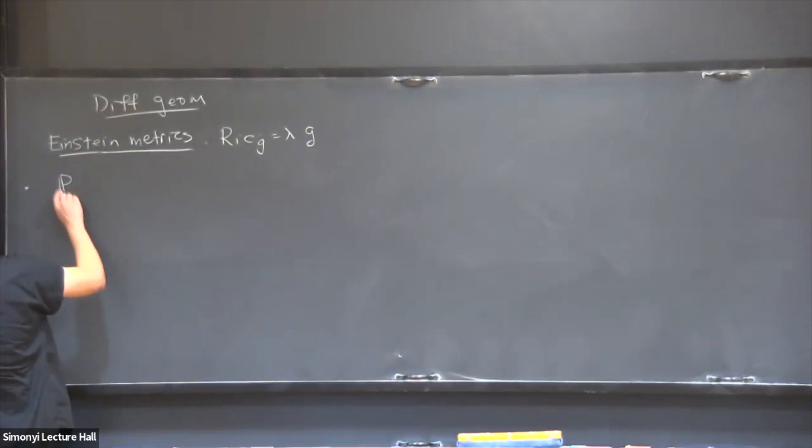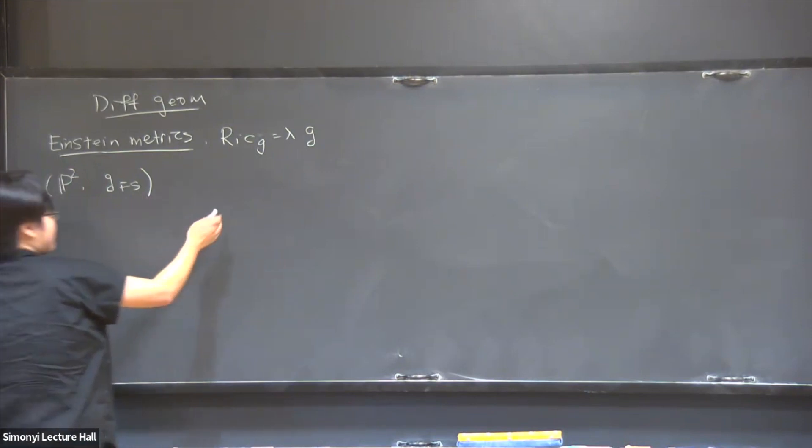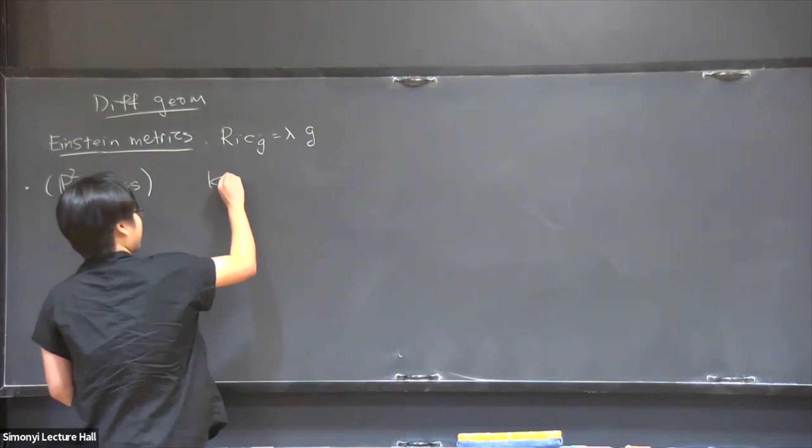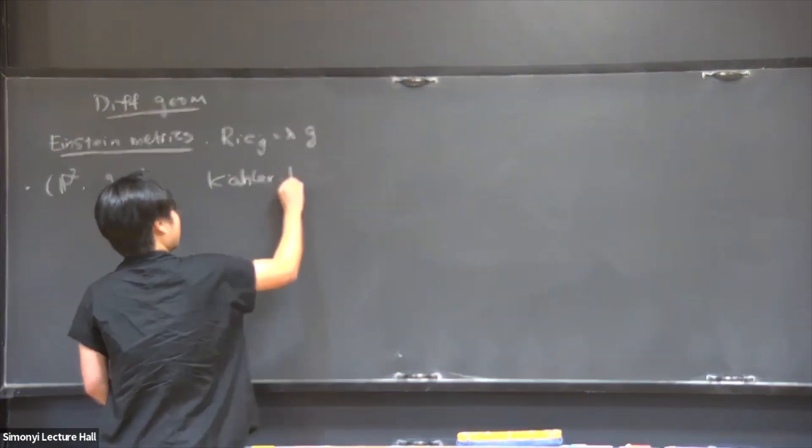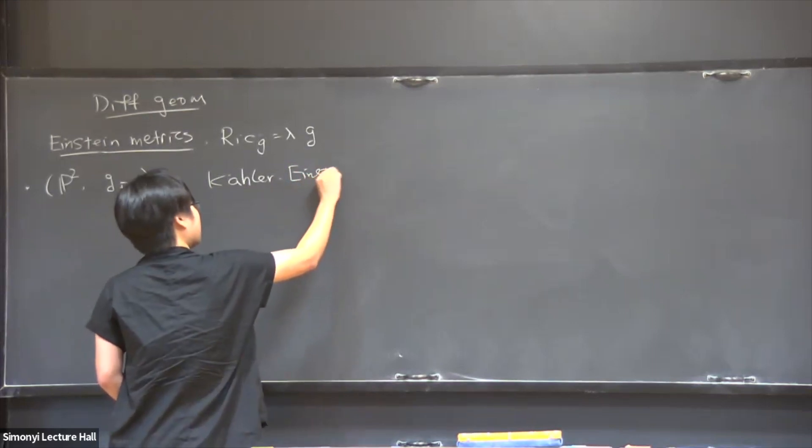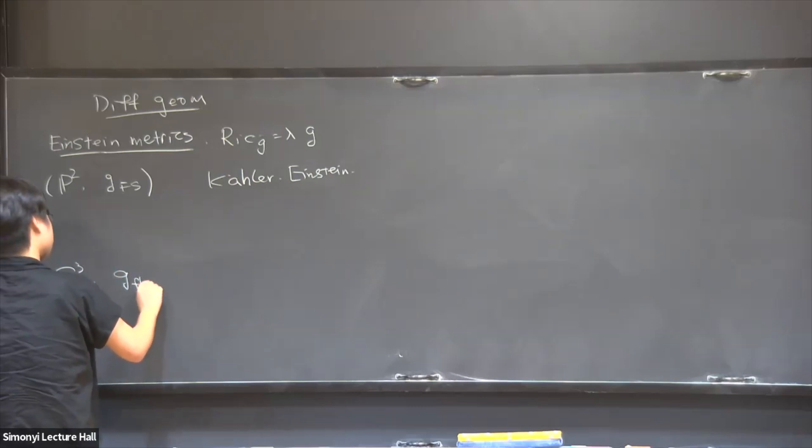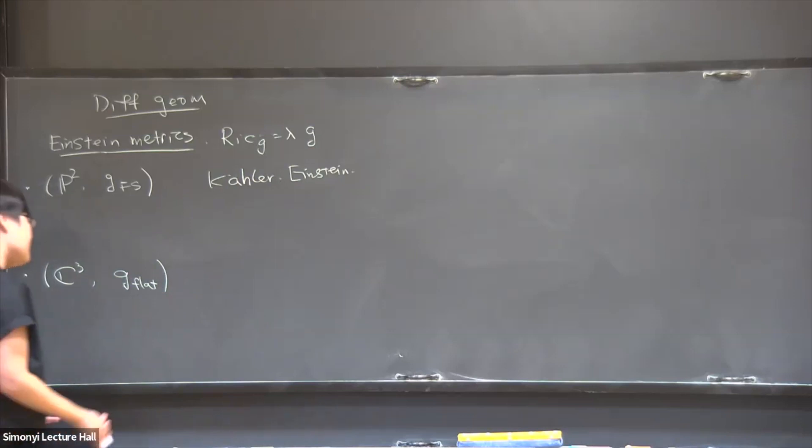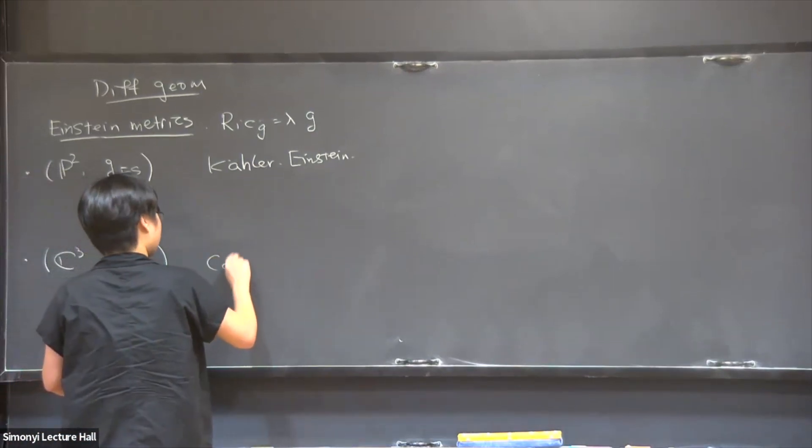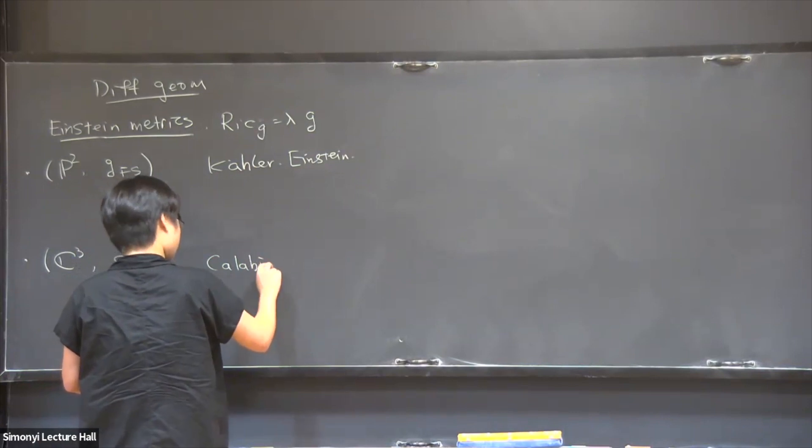So on the differential geometry side, there is a particular metric studied by Einstein. I figured this is the best place to talk about Einstein metrics. This is a Riemannian metric with the condition that the Ricci tensor is proportional to the curvature tensor, which in particular has constant Ricci curvature.